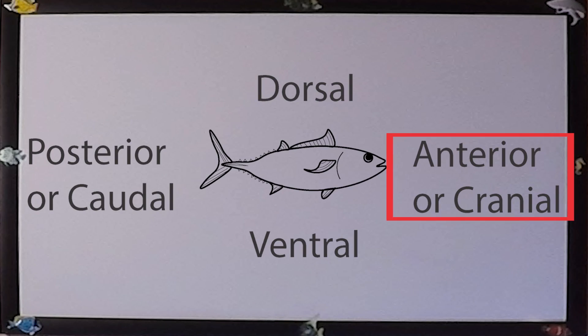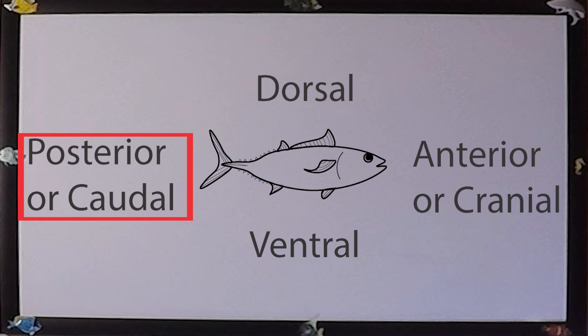The front of the fish, where the head is, is the anterior portion of the fish, a.k.a. the cranial region. Opposite of that, near the tail, is the posterior, or posterior end, a.k.a. the caudal region.